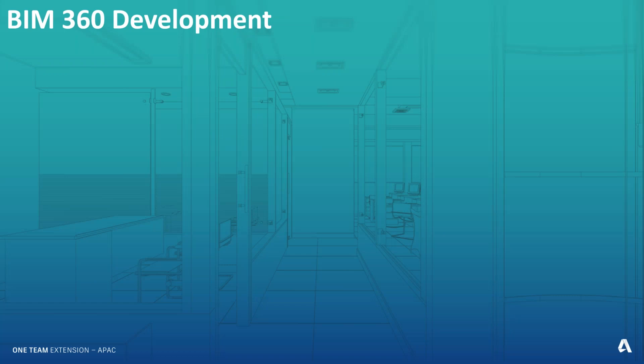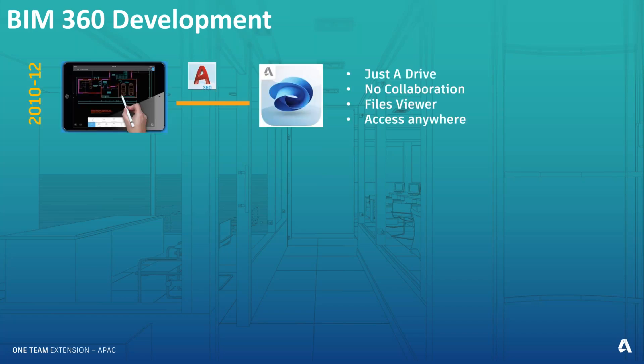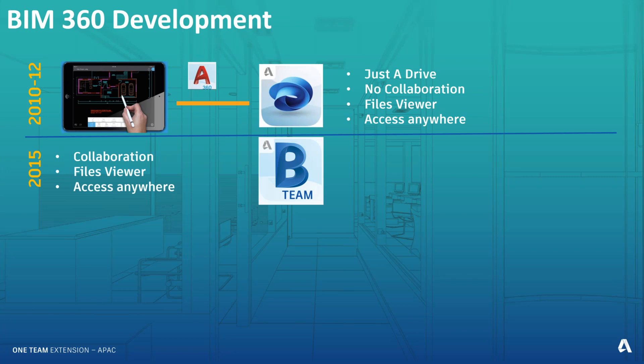For those new to BIM 360: it was developed over a long time. The first effort was A360 Drive in 2010–2012, where you could put a drawing or Revit file and view it directly. Around that time we also had AutoCAD 360 Mobile — now called AutoCAD Web at web.autocad.com — allowing a lighter version of AutoCAD on mobile or browser.